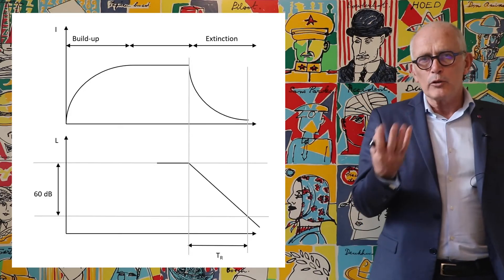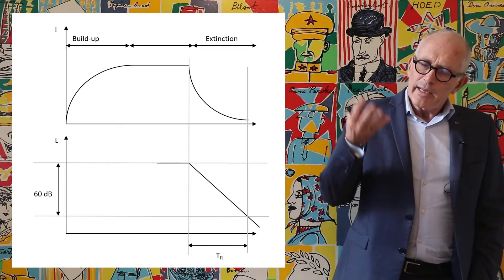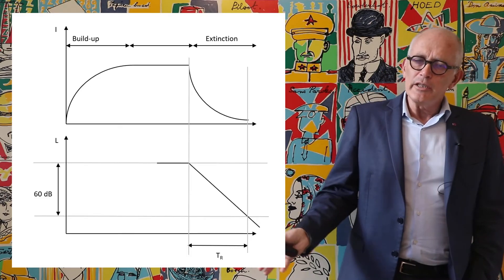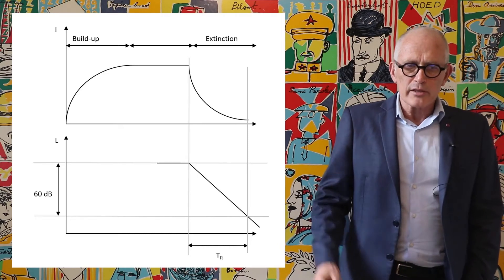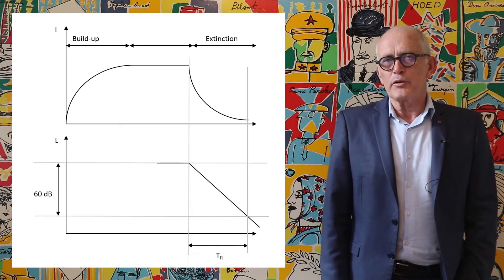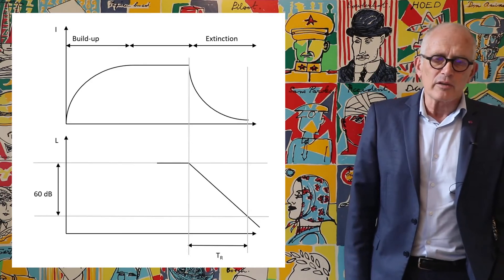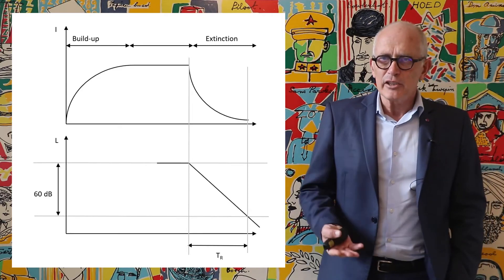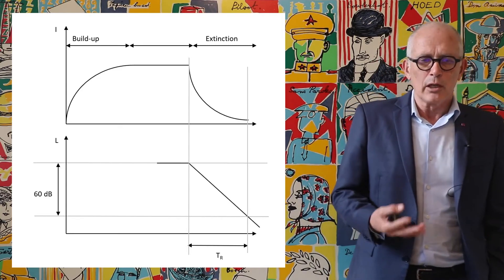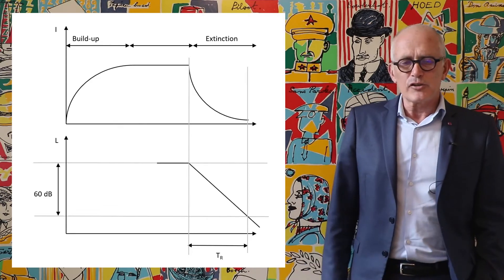This is called the build-up phase, and then we have a stability phase. Imagine that you suddenly suppress the source. The sound level will decrease very quickly but will not go to zero immediately, and we have an extinction phase which is symmetrical somehow to the build-up phase, where the sound level will exponentially decay.